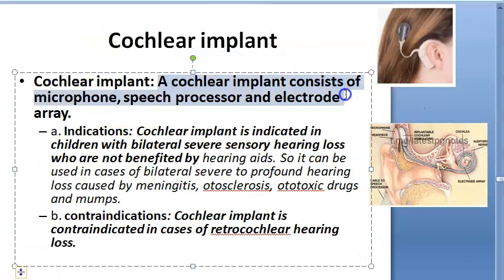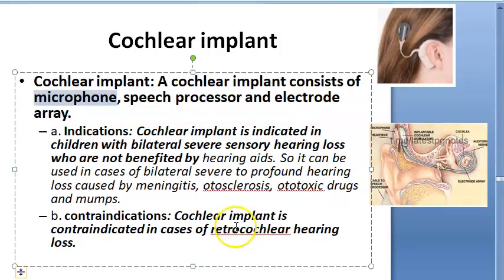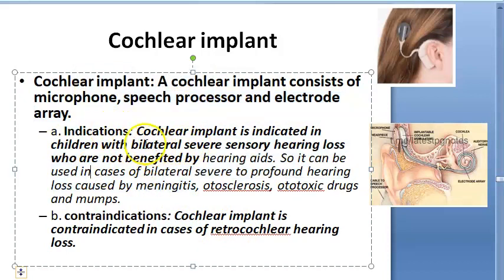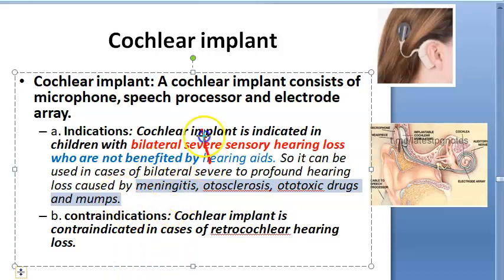A cochlear implant consists of a microphone, speech processor, and electrode array. First is the microphone to hear the voice, then you process the speech, then the electrode array. Indications: people who have bilateral sensory hearing loss - nerve is fine, so you can give information from the cochlea to the nerve. They are not benefited by hearing aids. It can be used in bilateral severe to profound hearing loss caused by meningitis, otosclerosis, ototoxic drugs, and mumps - all of which damage the hair cells.